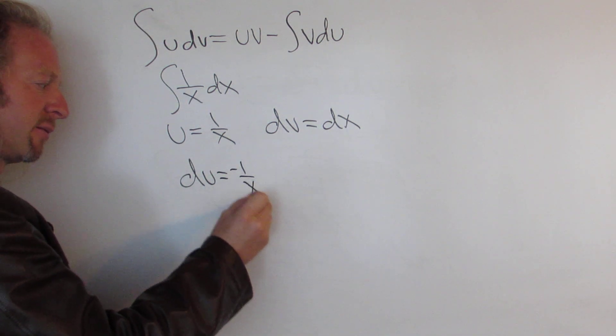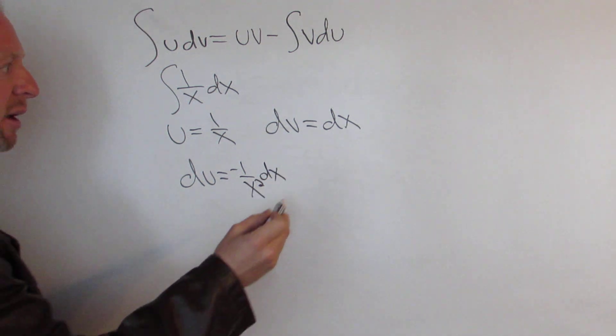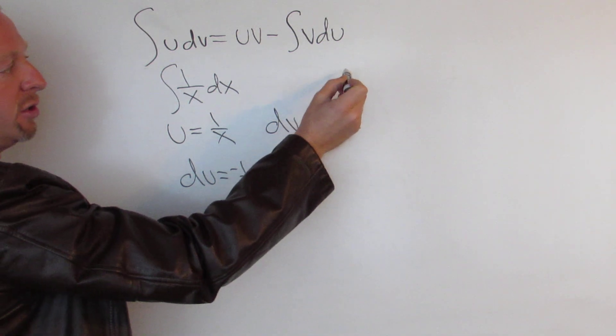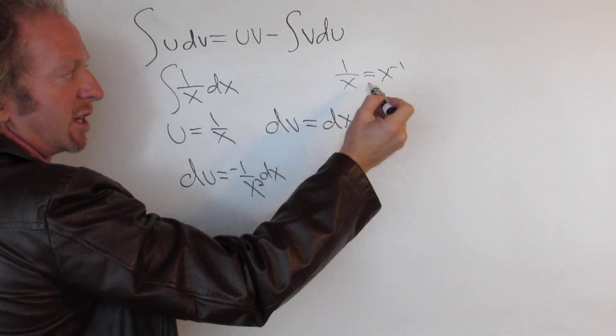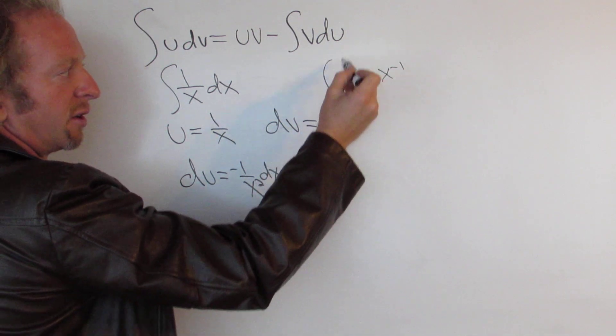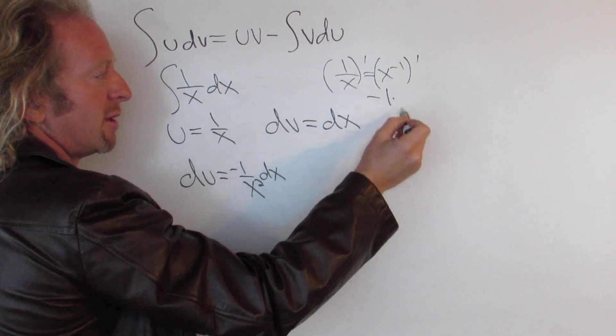So if you don't have it memorized you can always work it out right. I'll go over here to the side and do it. You can write 1 over x as x to the negative 1, and so when you take the derivative you put the negative in the front and then you subtract 1.